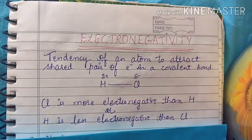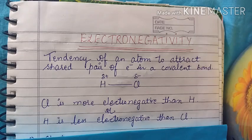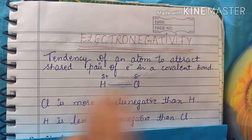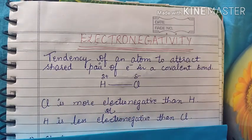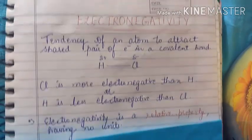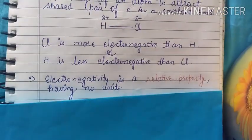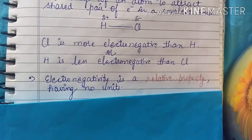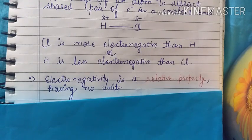Chlorine is more electronegative than hydrogen. That's why electronegativity is a relative property, so it has no units.